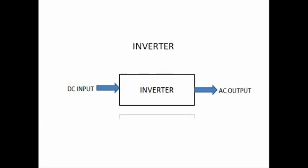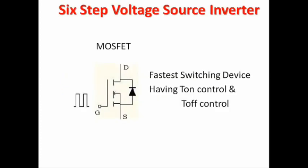Welcome to this video lecture. Here I am going to demonstrate the 6-step voltage source inverter. We all have some basic knowledge about an inverter — it is a switching circuit which converts DC input into AC output. The design may use switches like SCR, IGBT, or MOSFET. This particular 6-step voltage source inverter is designed with MOSFET as the switching device.